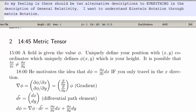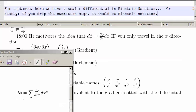So my feeling is there should be two alternative descriptions to everything in the description of general relativity. I want to understand Einstein notation through matrix notation. For instance, here we have a scalar differential in Einstein notation, or nearly. If you drop the summation sign, it would be Einstein notation.